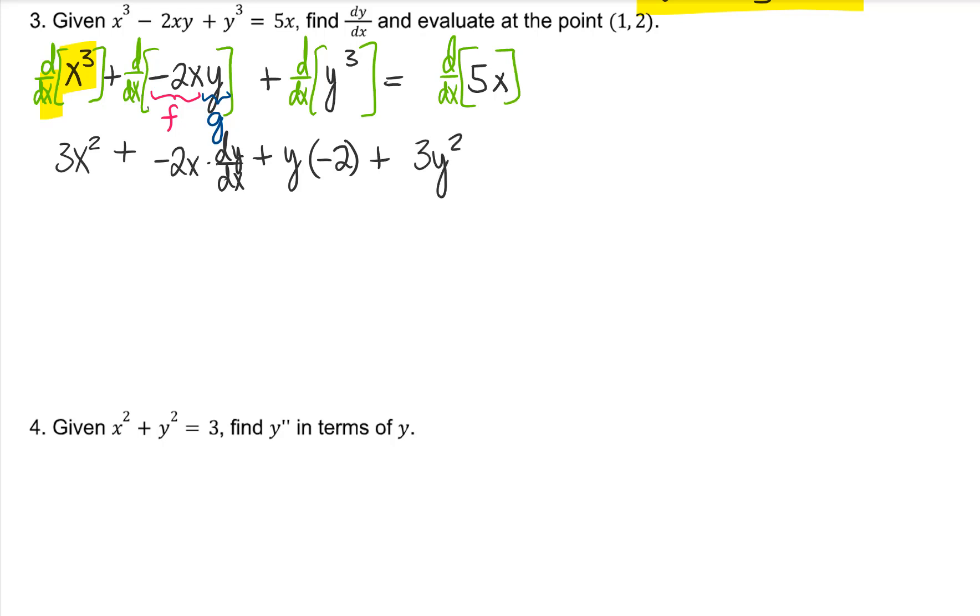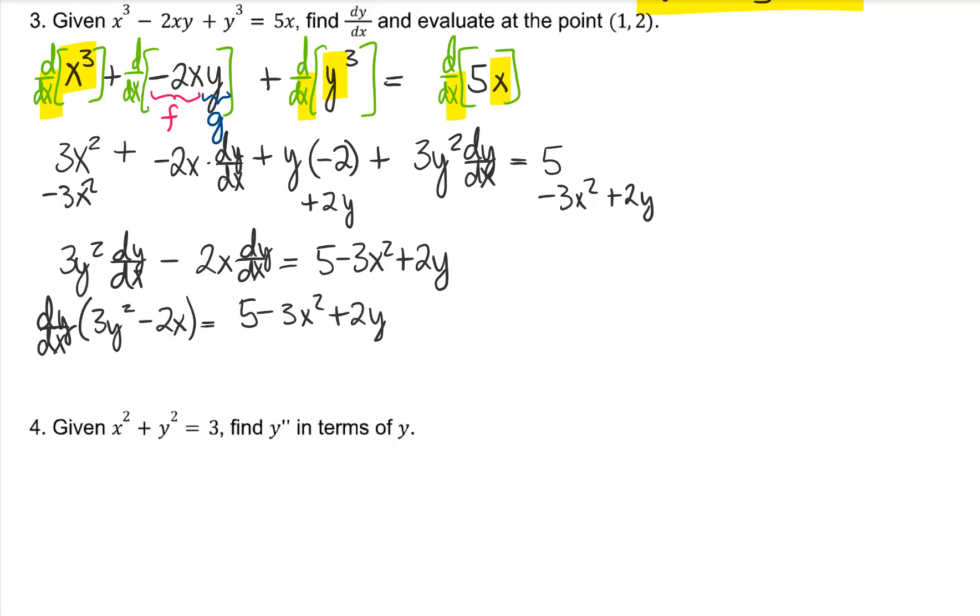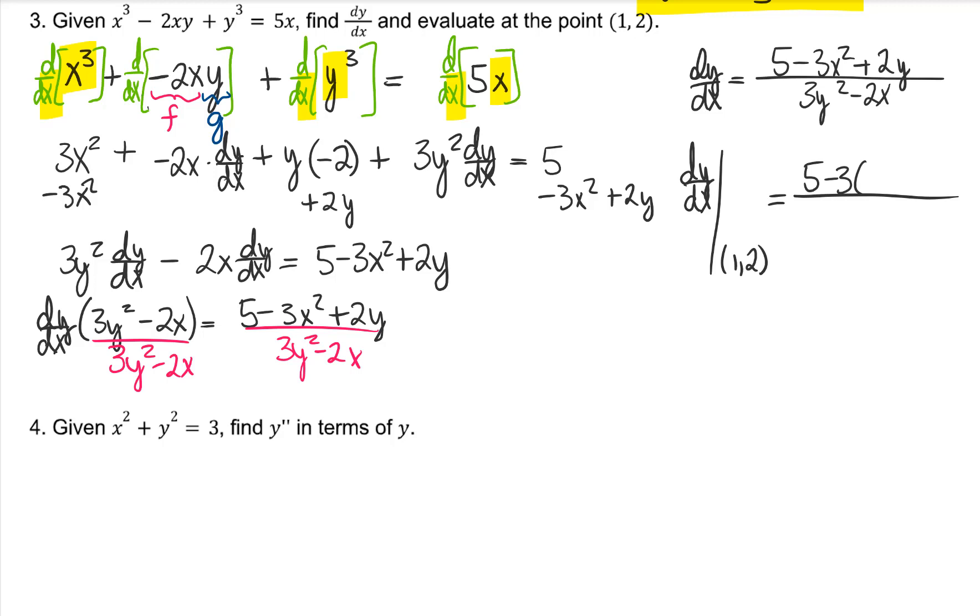The next one is y cubed, so 3y squared. Did your variables agree? No, they did not, so you also need to multiply by dy over dx, and the derivative of 5x is 5. It's time to get those dy over dx terms on the same side. Factor out dy over dx so that you can solve for it. Time to evaluate at the point 1, 2. The x's are 1, and the y is 2. The slope of the tangent at 1, 2 is 3 over 5.